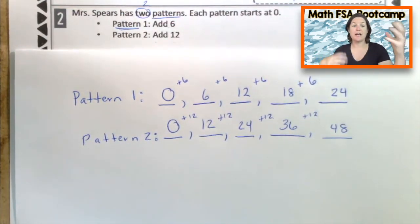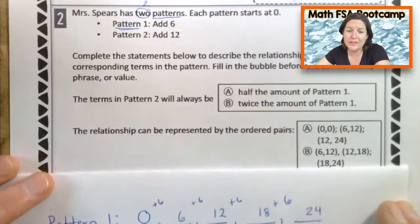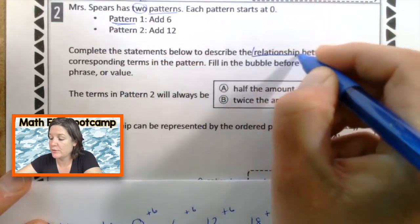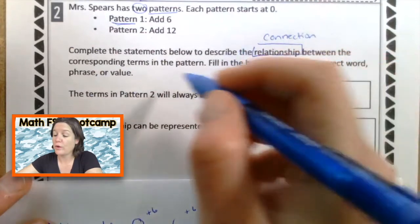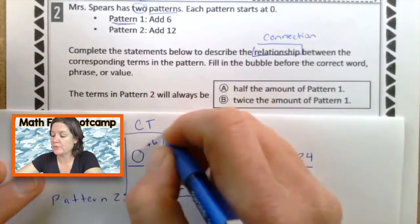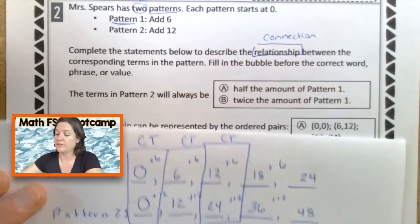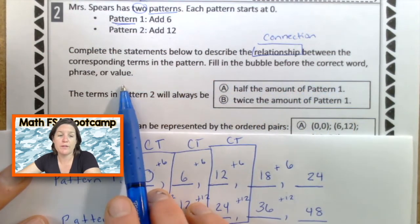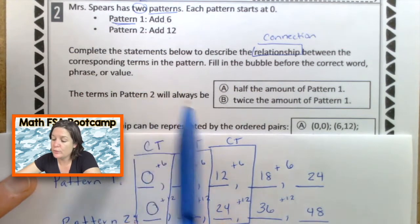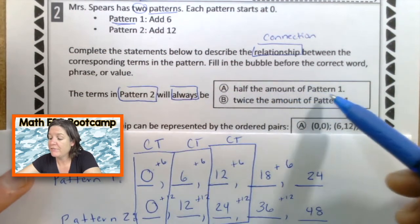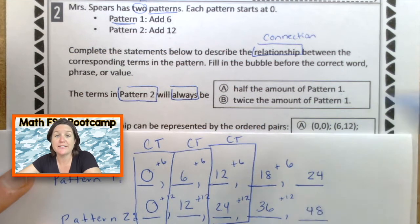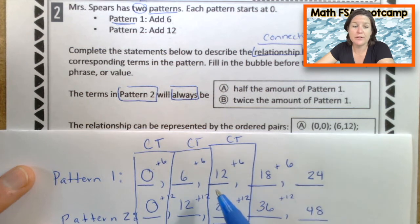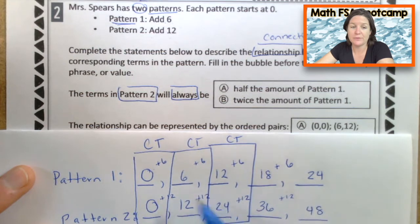Now this, the question didn't even ask us to do this. We're just having it make sense that we're able to understand the rest of the problem. I could have read all of this first, but I needed to understand so far what was going on. Complete the statements below to describe the relationship. The relationship is like the connection between the corresponding terms. Remember these are the corresponding terms. These are corresponding terms, 12 and 24. All of those are corresponding terms. What is the relationship or the connection between the corresponding terms and the pattern? Fill in the bubble before the correct word, phrase, or value. Okay. Looking at it, we have the terms in pattern two will always, ooh, that's pretty strong, be half the amount of pattern one or twice the amount of pattern one. Let's break that down to see if it makes sense.